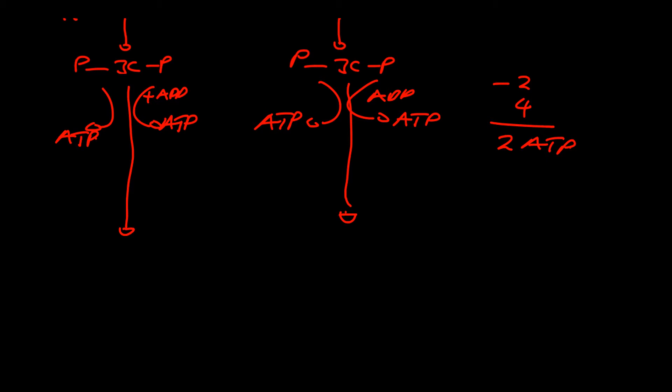Additionally, NAD is reduced by picking up an electron and hydrogen and turning into reduced NAD or NADH. This happens once for each side, so this gives a total production of two NADHs.